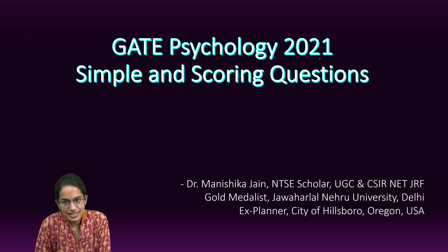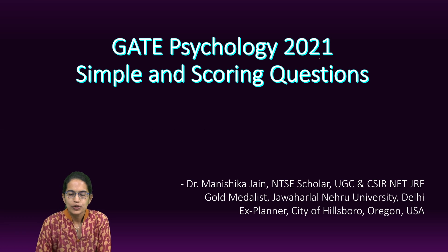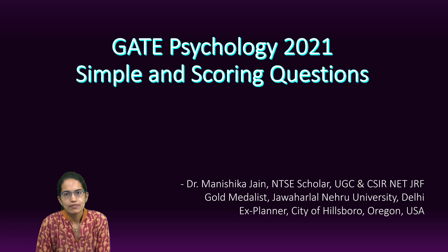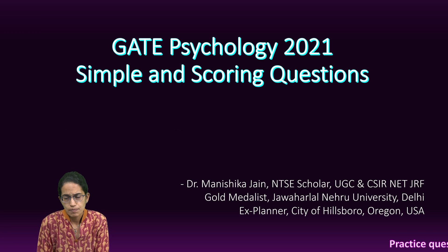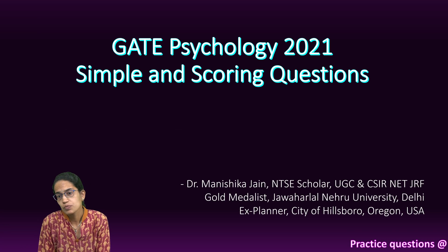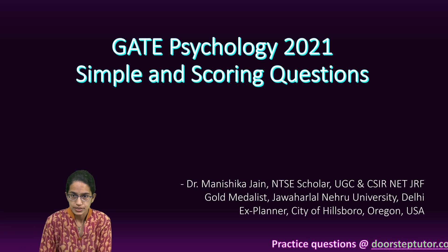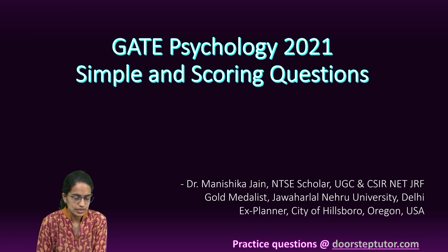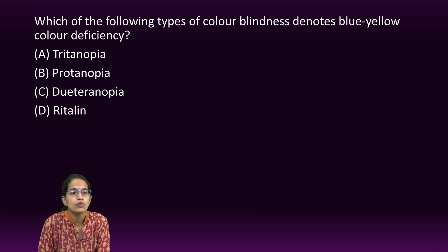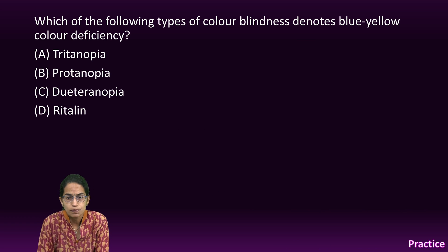Let's discuss the GATE Psychology paper 2021. We would be dividing the paper into three sections: simple questions, moderately difficult questions, and multiple select questions. In this section we would focus on the simple questions.